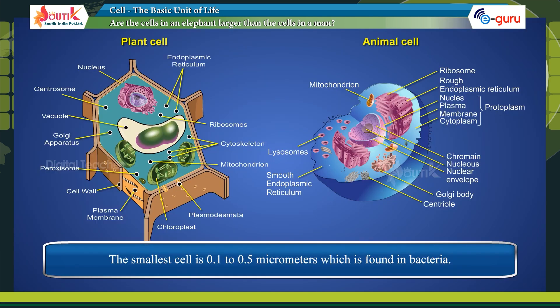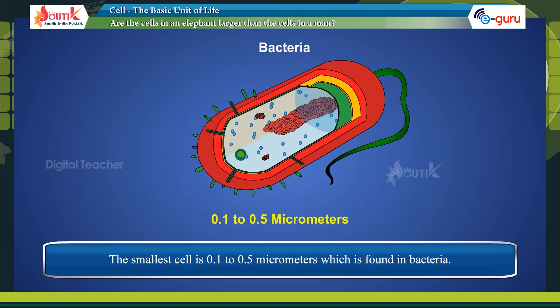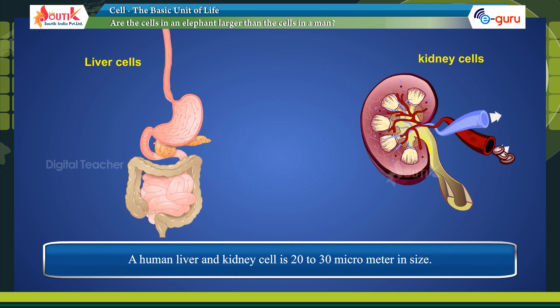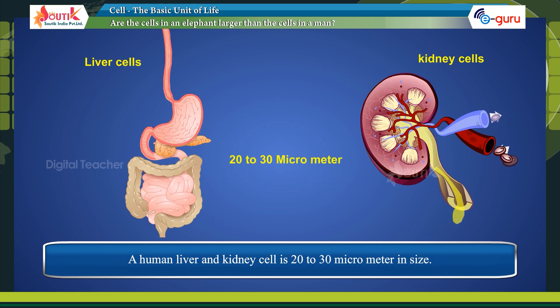The smallest cell is 0.1 to 0.5 micrometers, which is found in bacteria. A human liver and kidney cell is 20 to 30 micrometers in size.